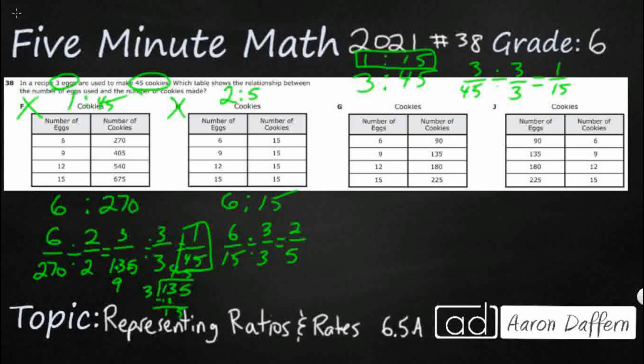6 to 90, let's see. So let's make it into a fraction. Divide this by 6. And I'm going to get 1, let's see, 6 goes into 90. Well, there we go. That could be it. There's my 1 to 15. So it could be G.